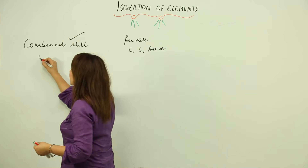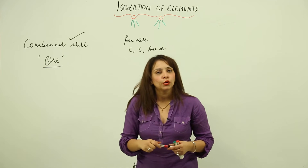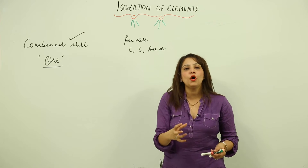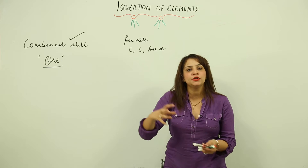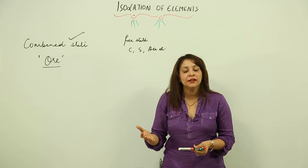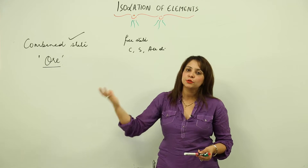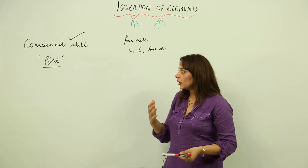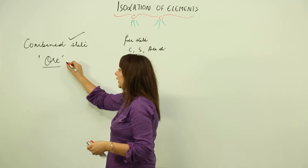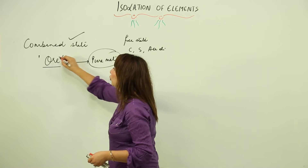That substance is called ore. Ore is actually the raw form of metal, and from that raw form you have to extract your metal. However, the metal you obtain is still not pure, so you need to carry out certain further processes to bring it into a ready-to-use form.